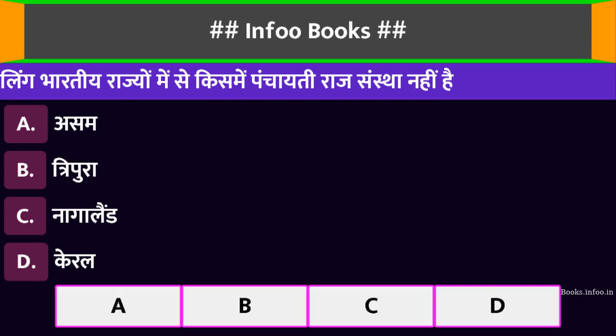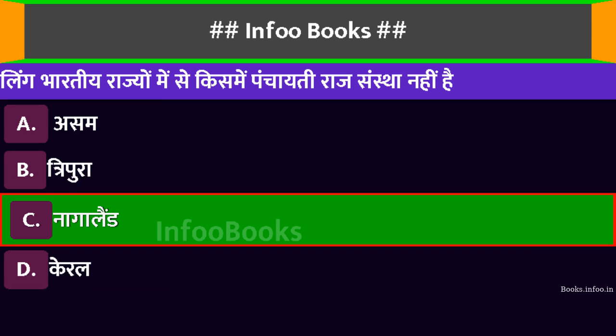निम्नलिखित भारतीय राज्यों में से किसमें पंचायती राज संस्था नहीं है? Option A: असम। Option B: त्रिपुरा। Option C: नागालैंड। Option D: केरल। सही विकल्प है: नागालैंड।